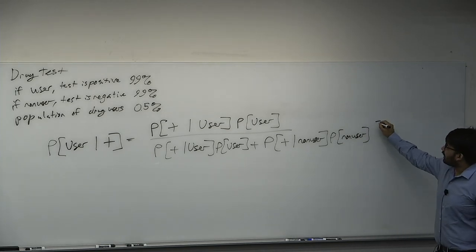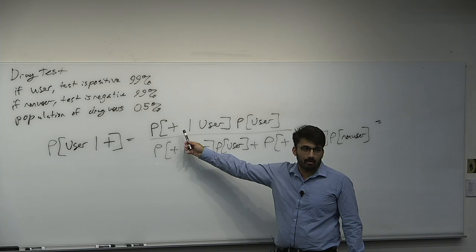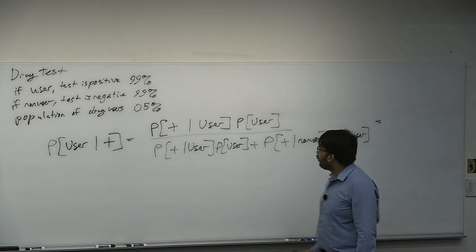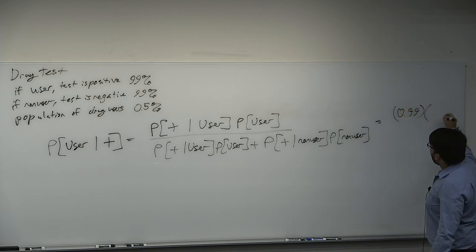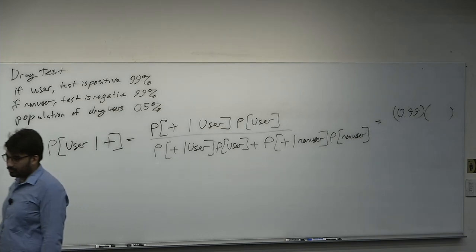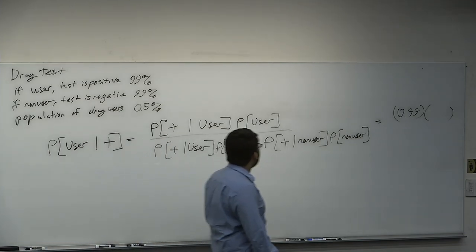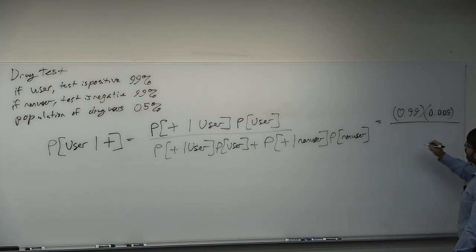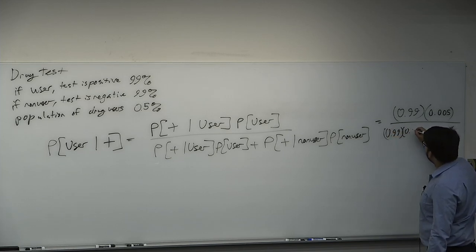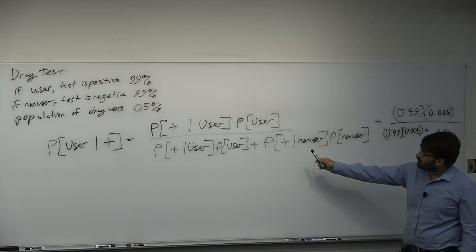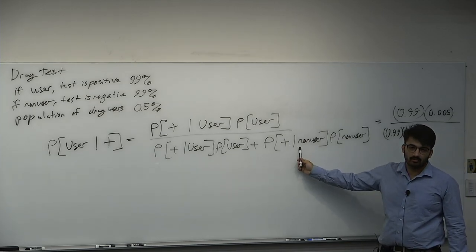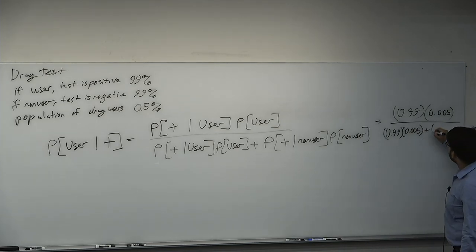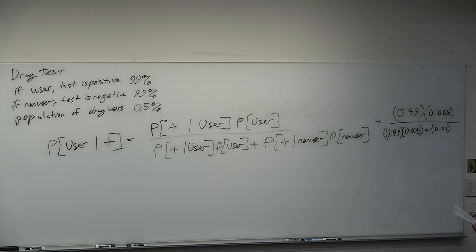Let's work this out. What's the probability the test comes back positive given they're a user? 0.99. What's the probability they are a user? 0.005. So the numerator is 0.99 times 0.005. In the denominator we have 0.99 times 0.005, plus what's the probability the test comes back positive given they're a non-user — 0.01 — times the probability they're a non-user: 0.995.